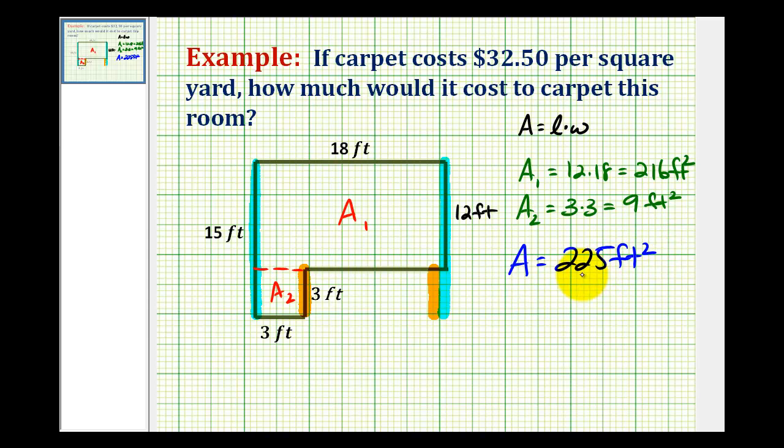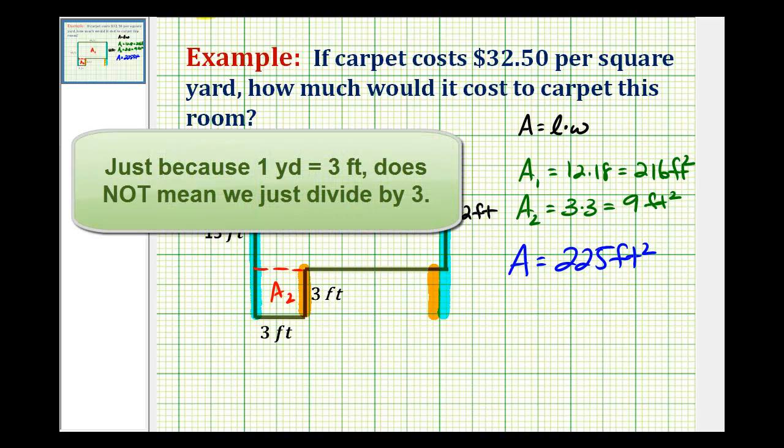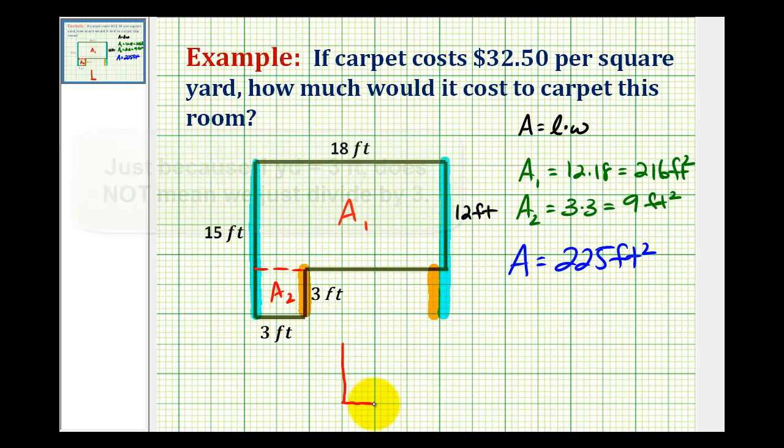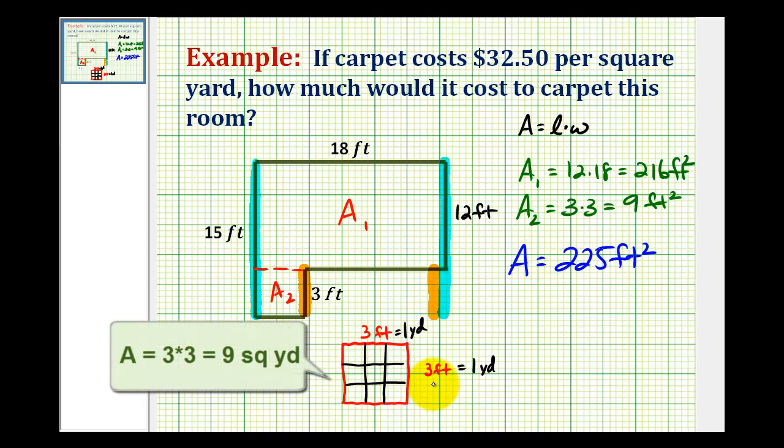Now, from here, we need to determine how many square yards are in 225 square feet. Well, 1 yard is equal to 3 feet, so if we have a square, let's call this square 3 feet by 3 feet, which is equal to 1 yard, we can see that 1 square yard would be equal to 9 square feet.